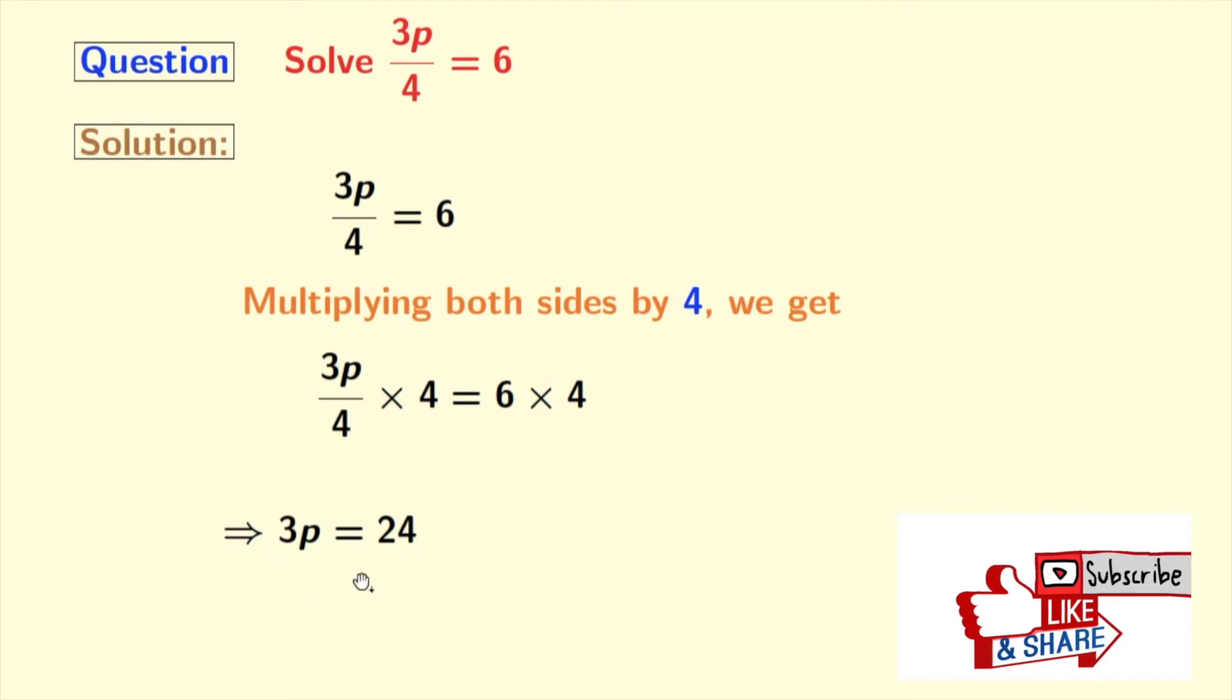Now to get the value of p, we have to divide both sides by 3, as 3 is the coefficient of p. So dividing both sides by 3, we get p in the left hand side and in the right hand side